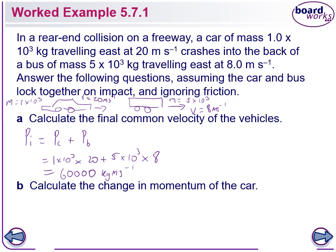If you put all that into your calculator you should get 60,000 — that's our initial momentum. We know that our final momentum is going to be equal to the same thing, because momentum is conserved. So final momentum is equal to 60,000.